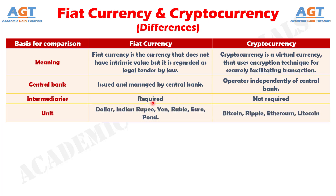Number 4: The most common examples of fiat currency units are dollar, pound, euro, yen, ruble, Indian rupee, etc. On the other hand, Bitcoin, Ripple, Ethereum and Litecoin are the popular cryptocurrency units.